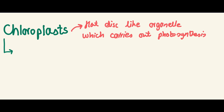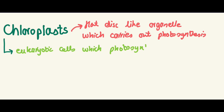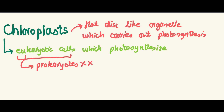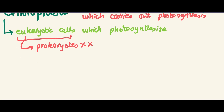One important distinction: chloroplasts are only present in eukaryotic cells which photosynthesize. Prokaryotic cells can photosynthesize but they don't have chloroplasts — they have different structures where photosynthetic pigments are present. This is something they love to ask in paper one, so please keep this in mind.